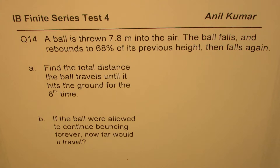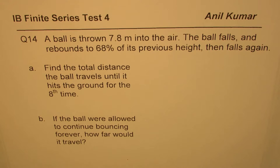Here is question number 14. A ball is thrown 7.8 meters into the air. The ball falls and rebounds to 68% of its previous height, then falls again. Part A is: find the total distance the ball travels until it hits the ground for the eighth time. Part B is: if the ball were allowed to continue bouncing forever, how far would it travel?